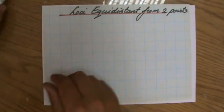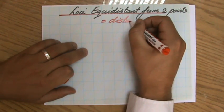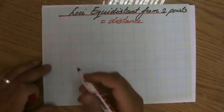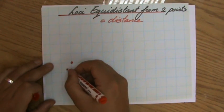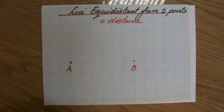Equidistant means equal distance, or the same distance. Now let's say I have a point here, A, and I have a point here, B, and I'm interested in all the points equidistant, so the exact same distance to A as to B.